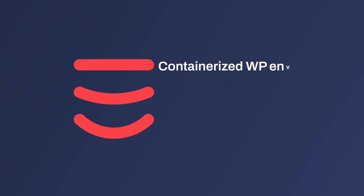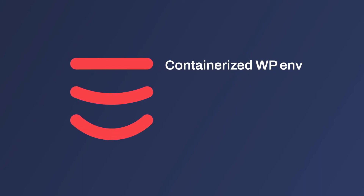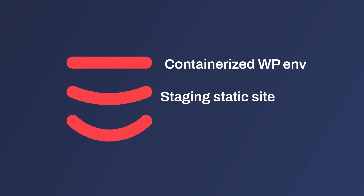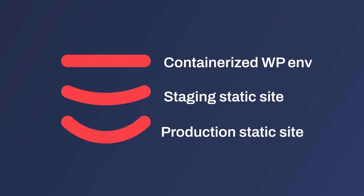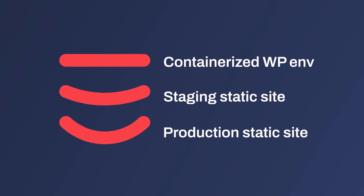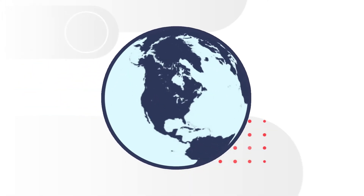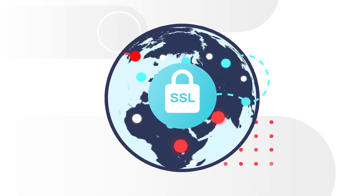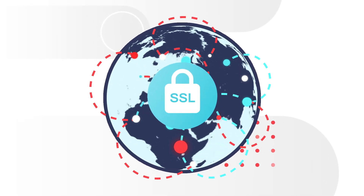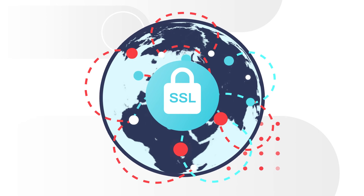You get a secure containerized environment that hosts your WordPress site, a static staging site for testing changes, and, of course, your live production static site for all the web to see. SSL and CDN is included, configured for the best hosting and delivery environment possible.